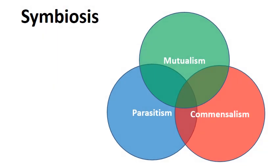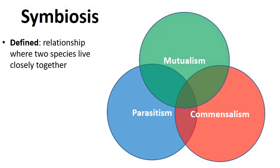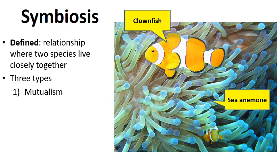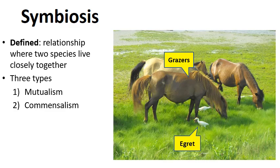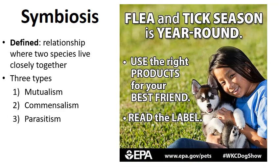Now let's shift to symbiosis — a relationship where two species live in a closely knit relationship. Sometimes both benefit, but not always. There are three types: mutualism, where both individuals benefit; commensalism, where one benefits and the other receives nothing; and parasitism, where one benefits and the other is harmed.